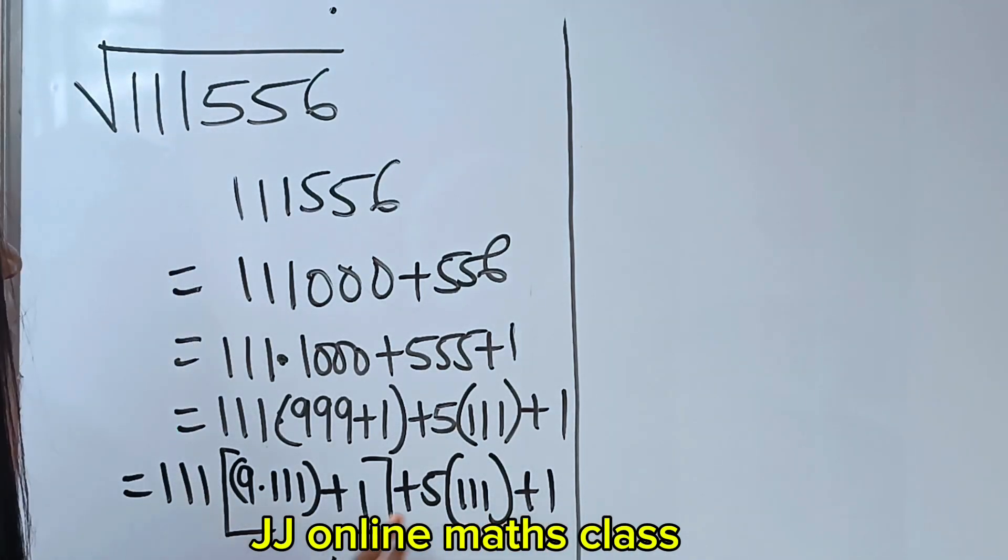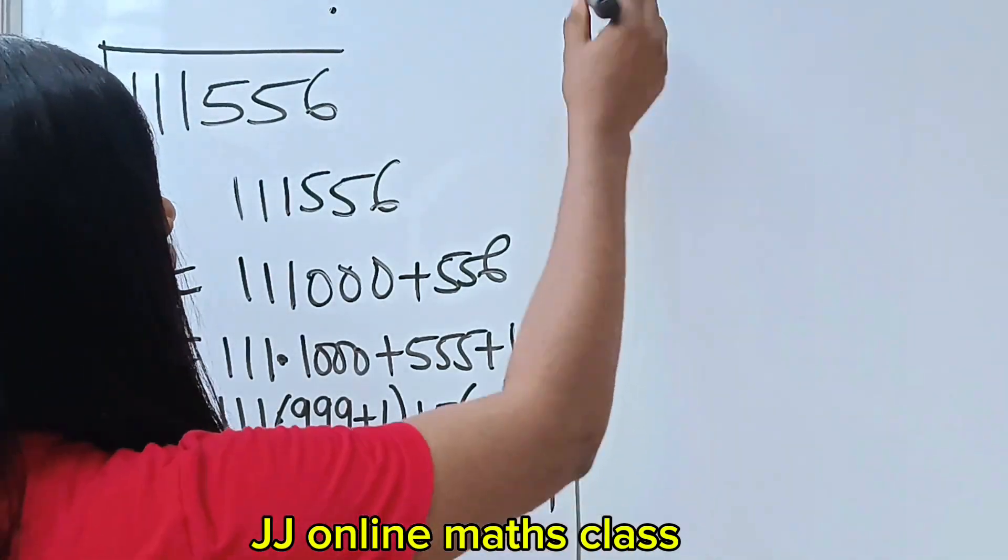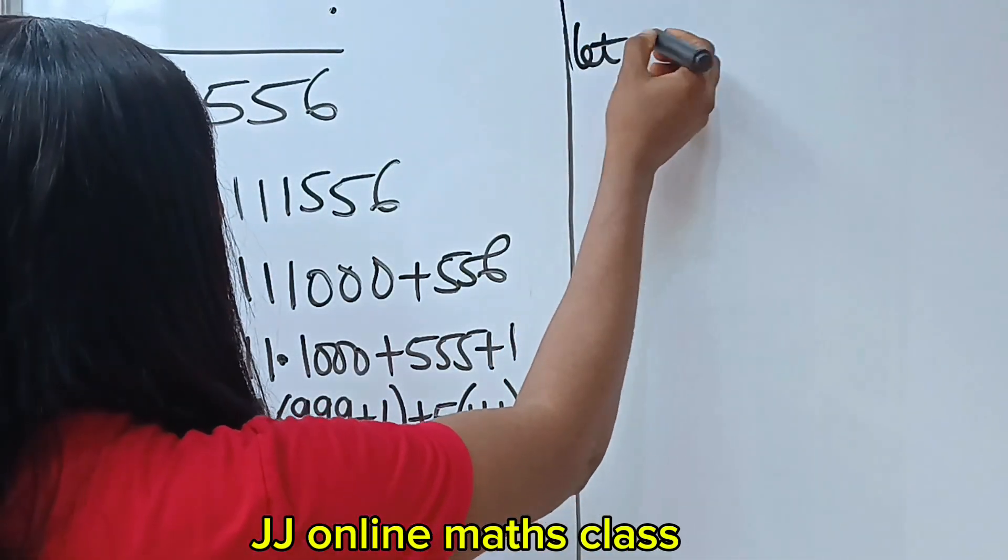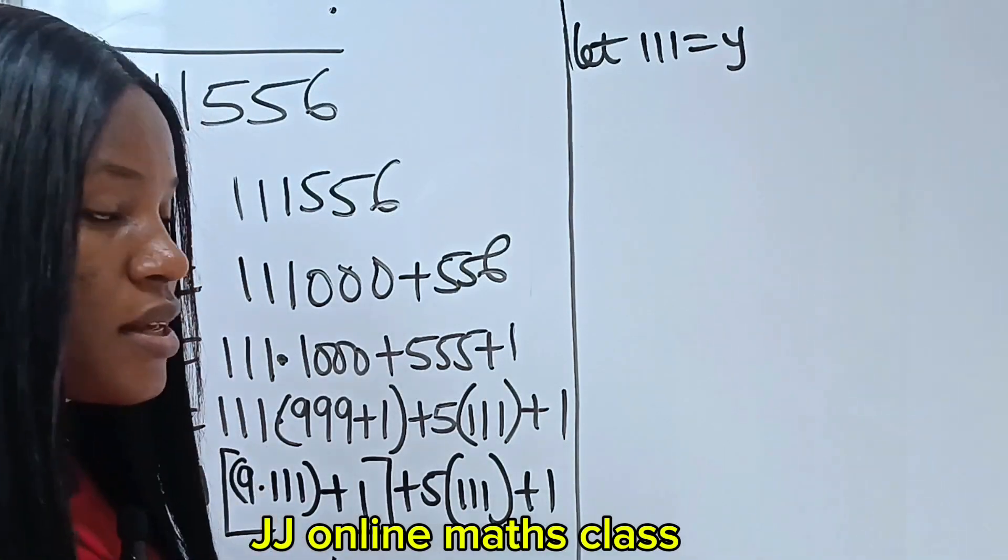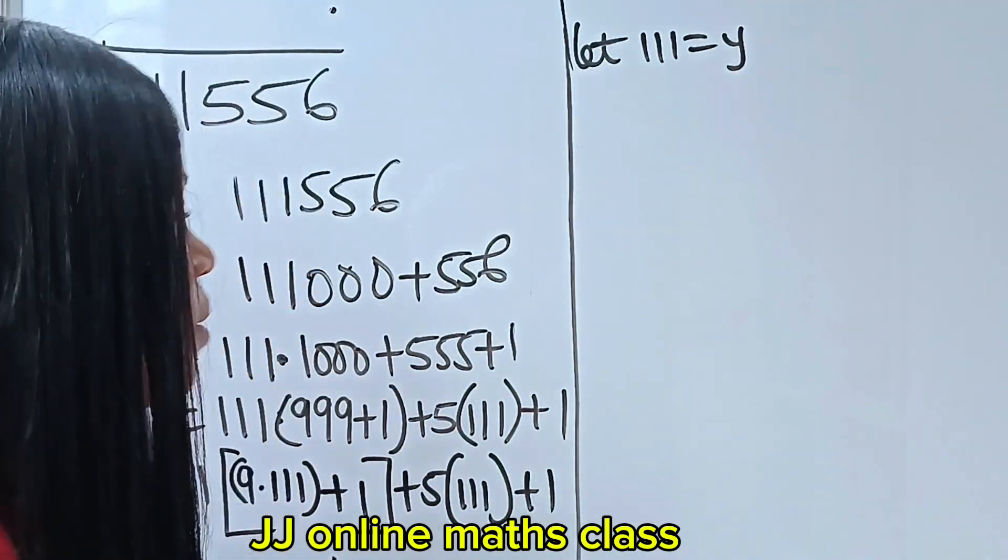Now plus 5 brackets 111 plus 1. Now we have 111 everywhere. Let's call it a number. So, let's say let 111 be equal to y. Let's call it a variable. Let's give it an alphabet.